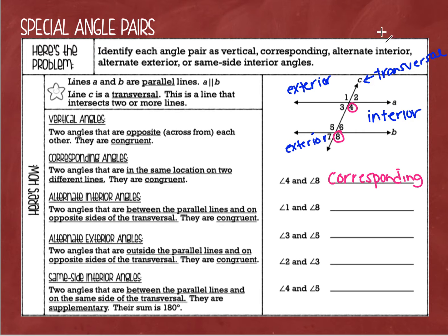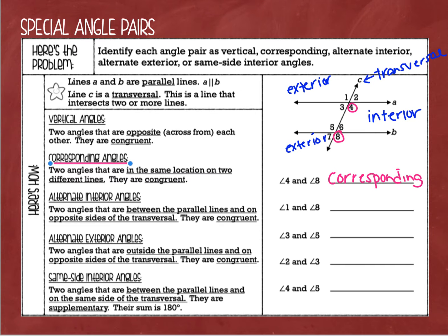Looking over to our list, corresponding angles are right here — I'm going to highlight them in pink. Corresponding angles are two angles in the same location on two different lines, and they are congruent to each other. Congruent means that they are equal, so whatever the measure of one of those angles is, the other is going to be the same exact thing.